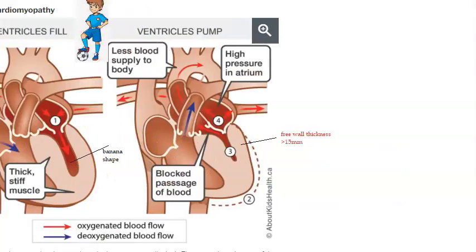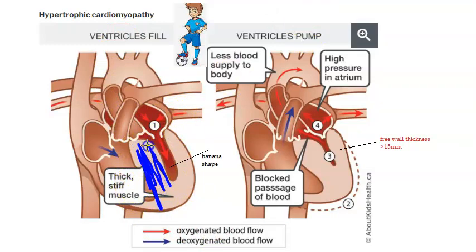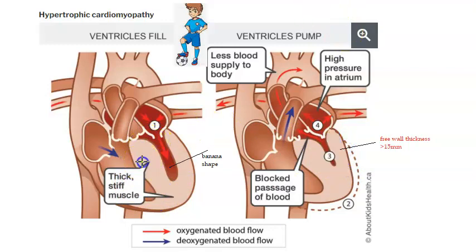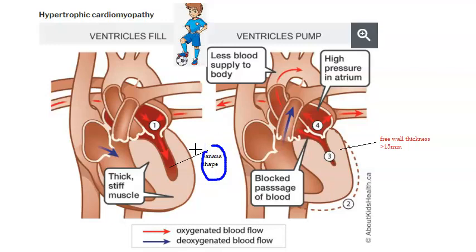In teenagers and young adults, what you're seeing is the septum between the right ventricle and the left ventricle. You can see septal hypertrophy, and the free wall is also thick. Because of this, the left ventricle is very small — it is actually banana-shaped.